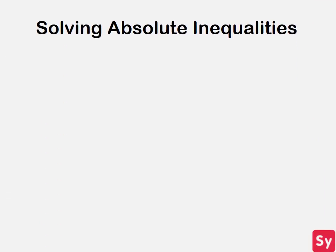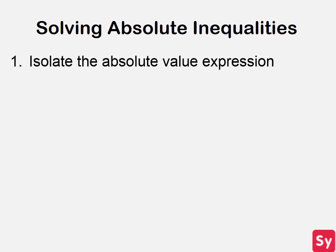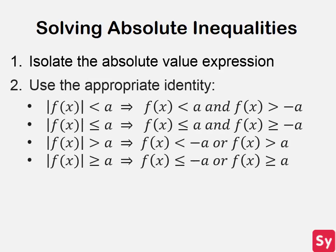In order to solve absolute value inequalities, first isolate the absolute value expression on one side of the inequality. Then use the appropriate identity depending on the inequality sign in the expression.